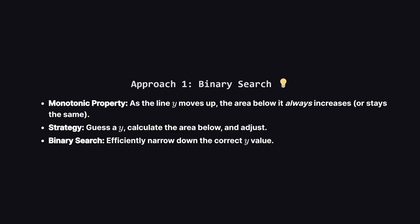So how do we solve this generally? The first approach relies on a simple observation: as we move our horizontal line upwards, the area of the squares below that line can only increase or stay the same — it never decreases. This is what we call a monotonic property. Whenever you have a monotonic problem where you're looking for a specific value, binary search is usually the answer. We can guess a y value, calculate the area below it, and if that area is too small we move our line higher. If it's too big we move lower. We repeat this until we zero in on the exact answer.